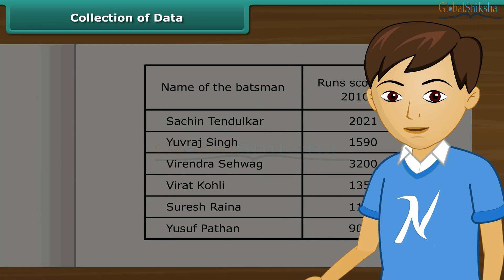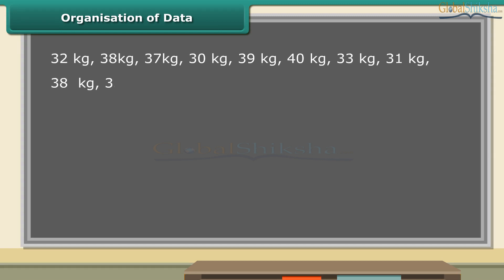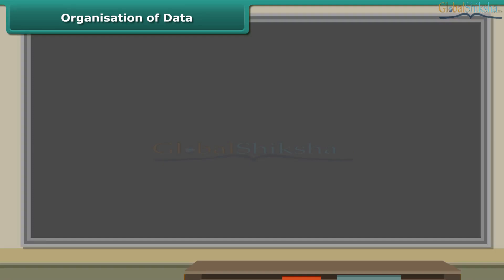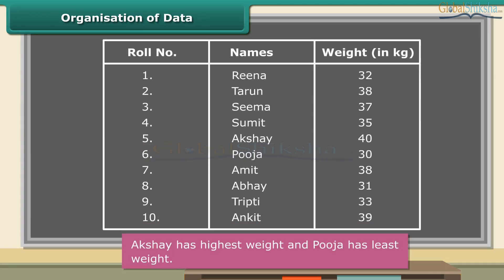So children, unless and until you don't collect the appropriate data, you cannot know the desired information. We collect data to record and organize it. Look at the following data. A class teacher of class 7 listed the weight of 10 students. Now look at this organized data — you can easily know which student has the highest weight and which has the least. So when we put data in a proper table, it becomes easy to understand and interpret.